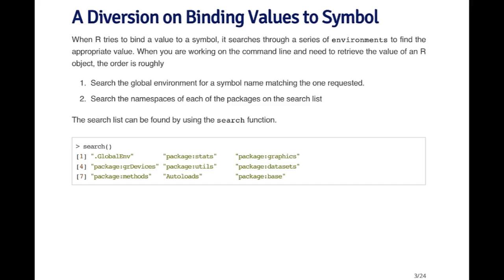The search list consists of all the R packages currently loaded into R, and there's an order to the search list. It starts at the first element, which is the global environment — that's always number one. Second on the search list is the stats package, then the graphics package, the GR devices package, all the way down. At the very end is the base package. Somewhere in this list, R is going to look for a function called LM, and if it's not in the global environment, it will eventually find it in the stats package.